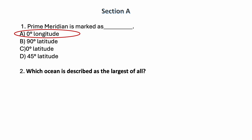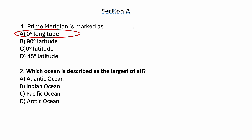Which ocean is described as the largest of all? Options are: Atlantic Ocean, Indian Ocean, Pacific Ocean, Arctic Ocean. The correct answer is Pacific Ocean. Pacific Ocean is described as the largest of all.